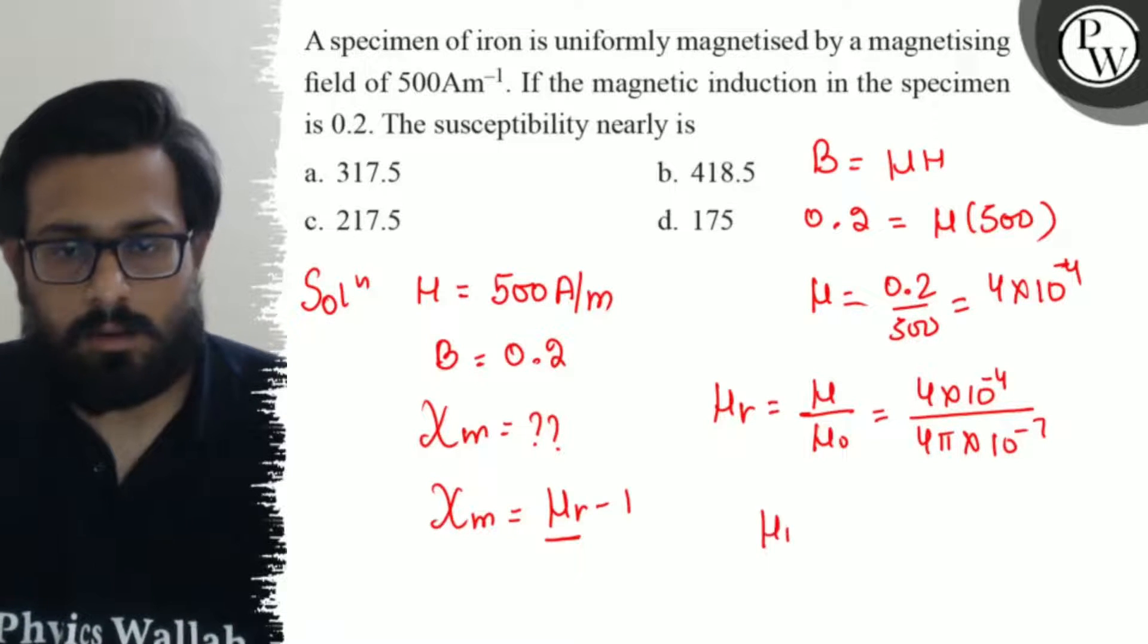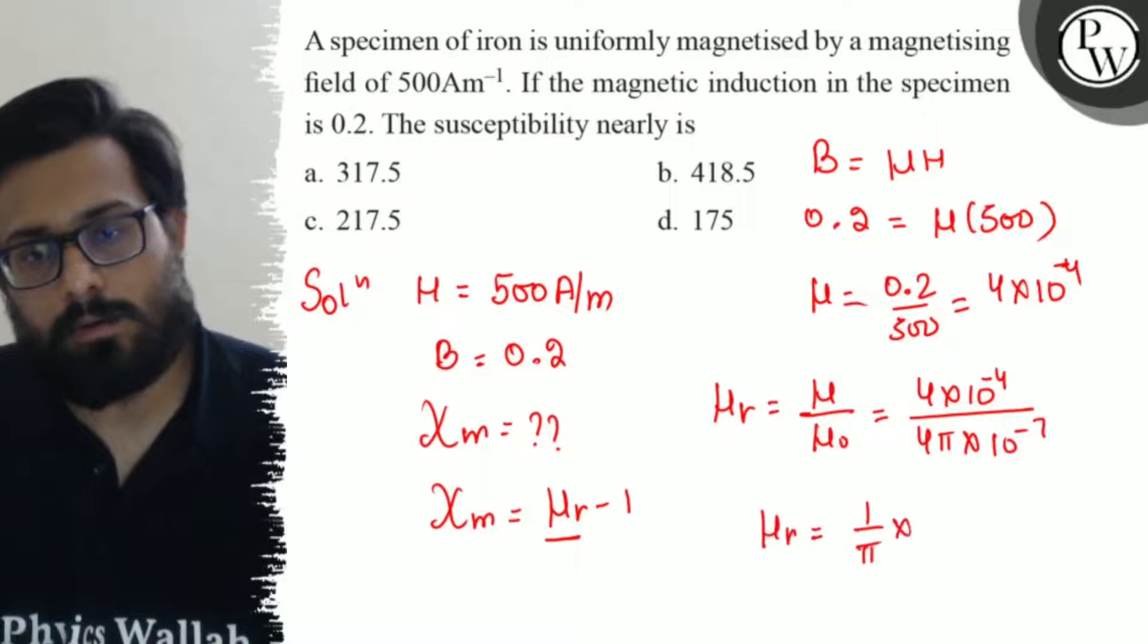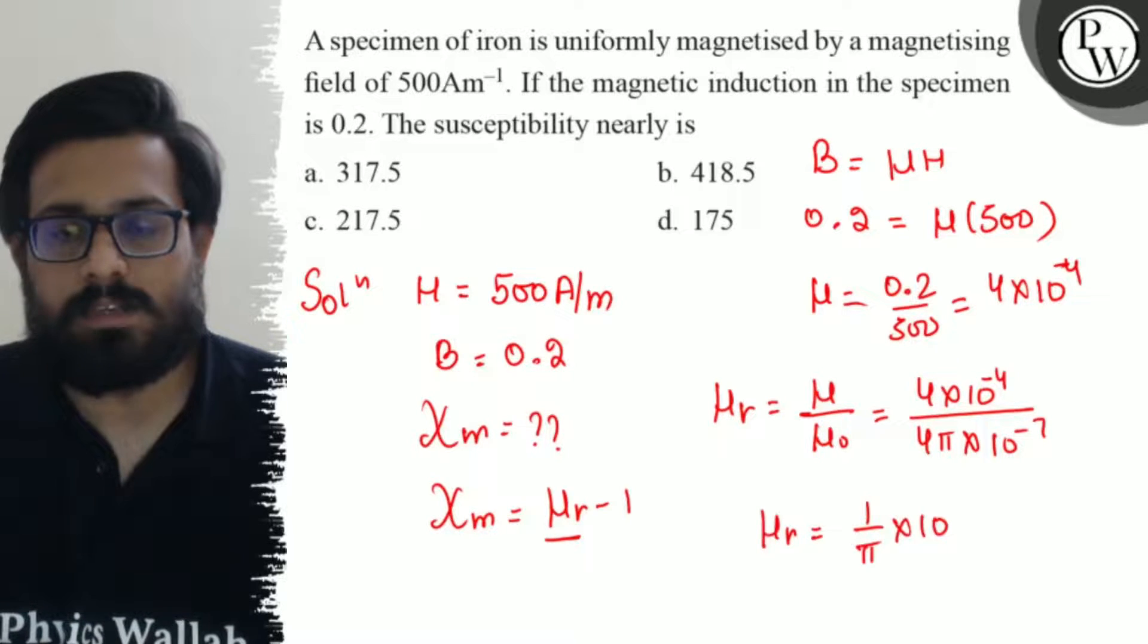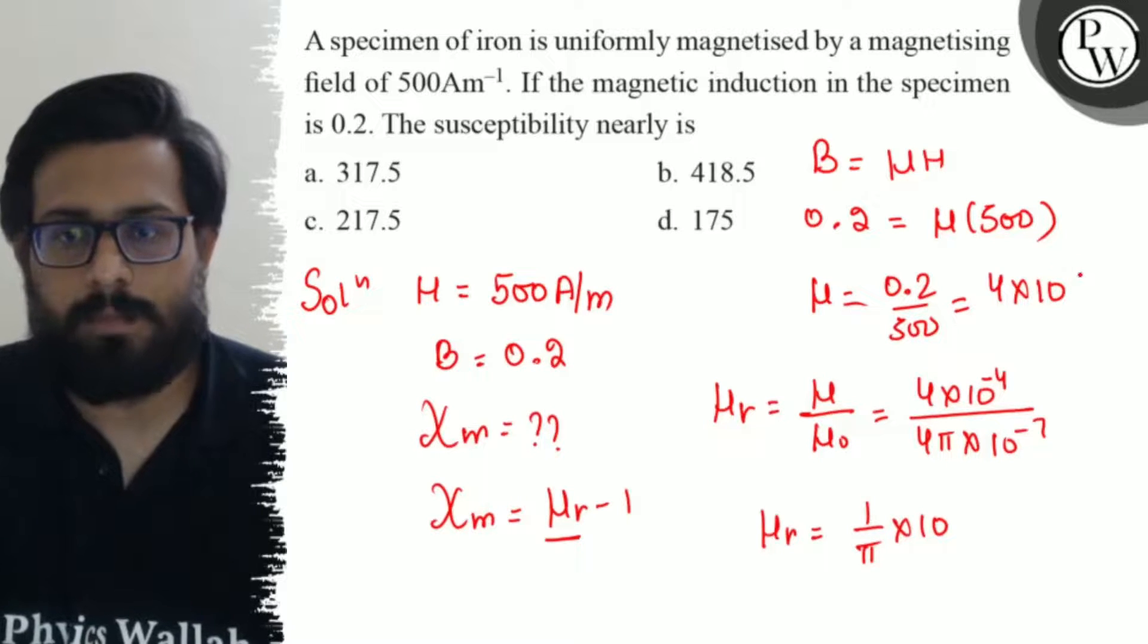From here, μR = 1/(π × 10^-3). Simplifying the exponents: -4 minus -7 equals +3, so we get 10^3.